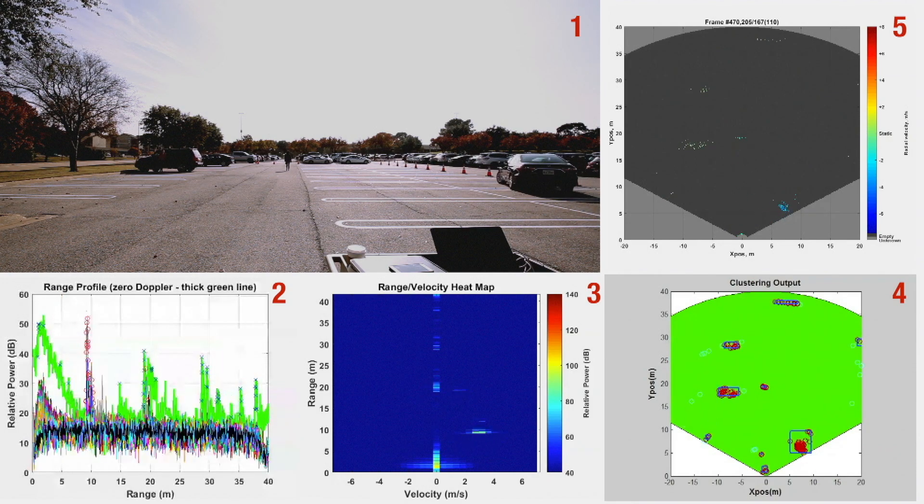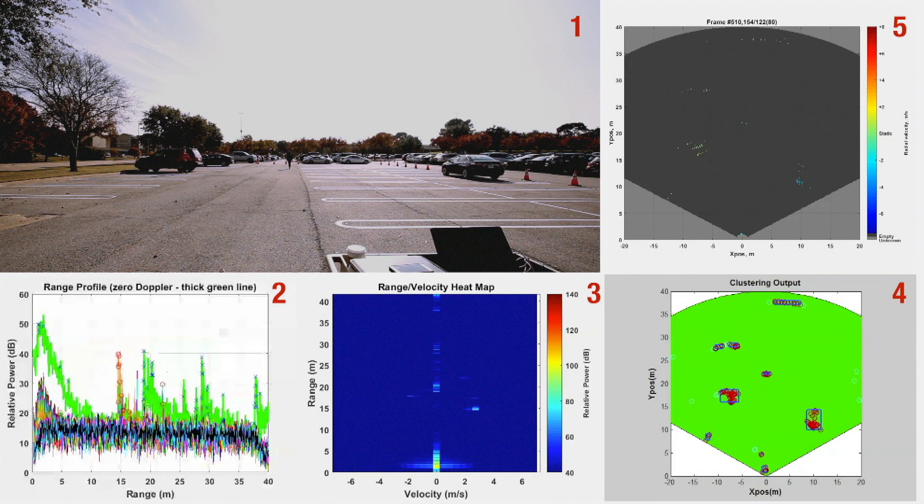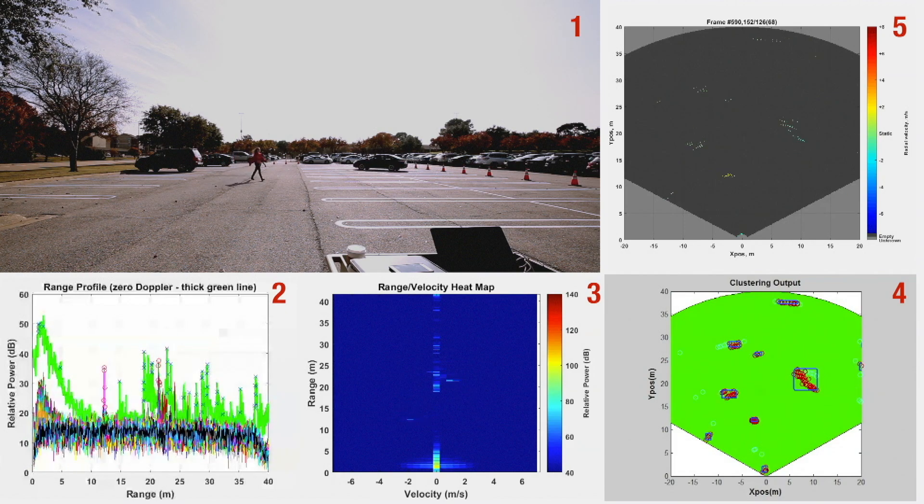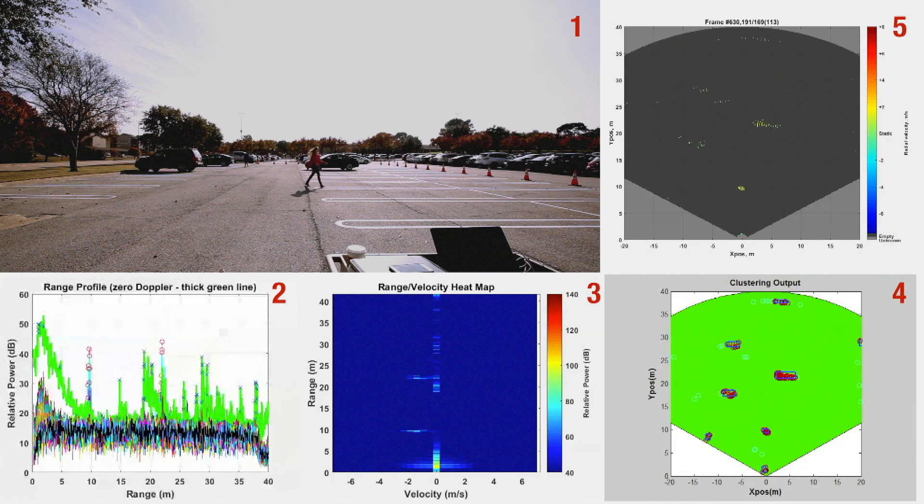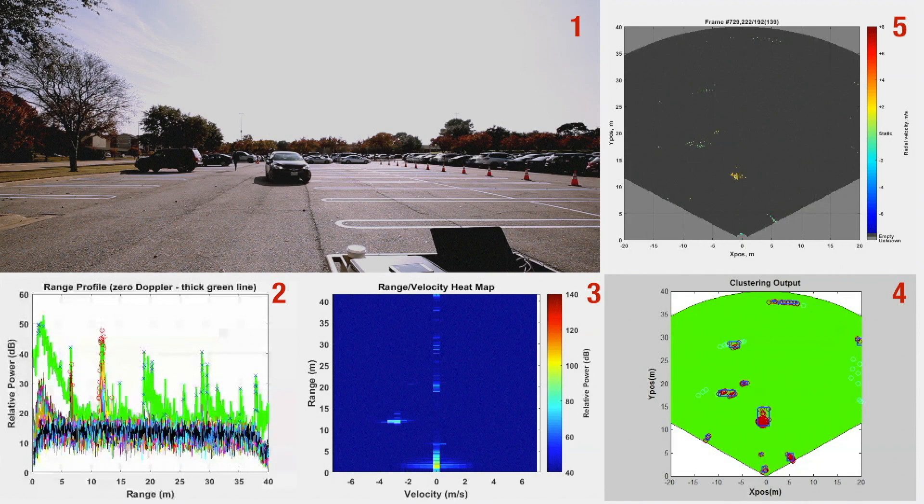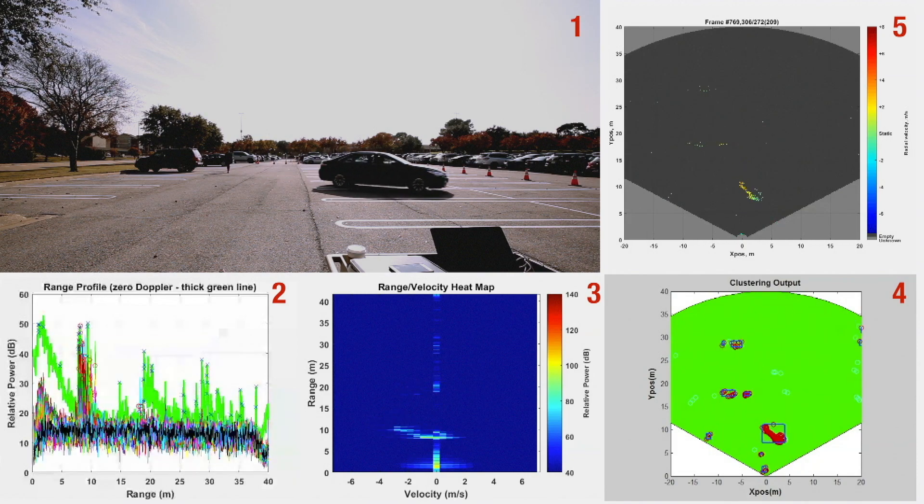Notice the radar can detect a person as she leaves a car and walks away. Detecting a small object in front of another large one is a very hard problem. However, with the rich spatial and velocity information shown in plot 5, we are able to separate these two objects.